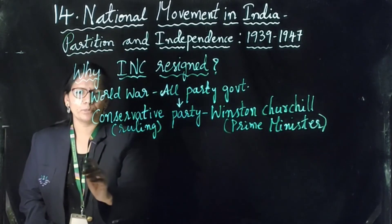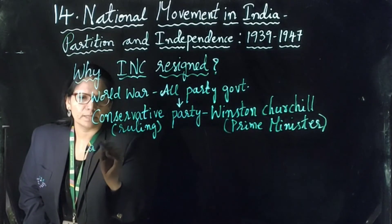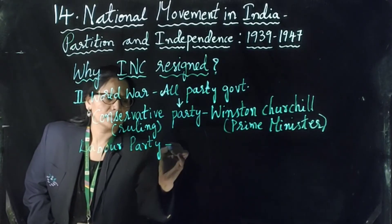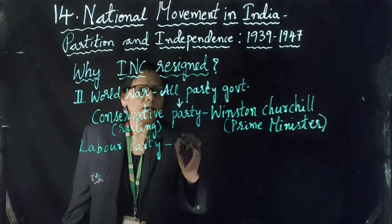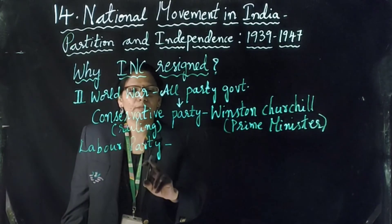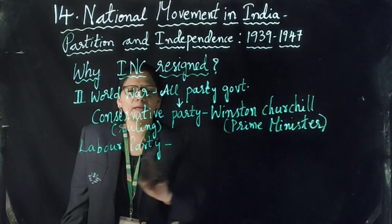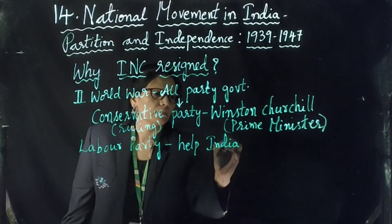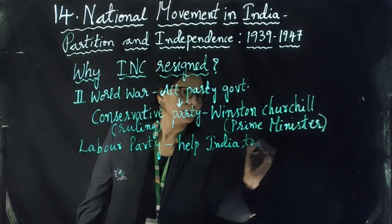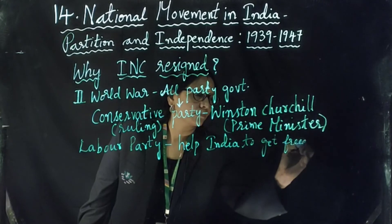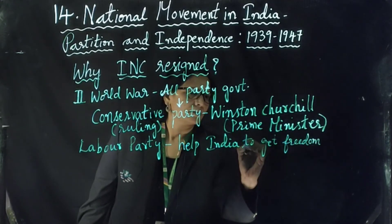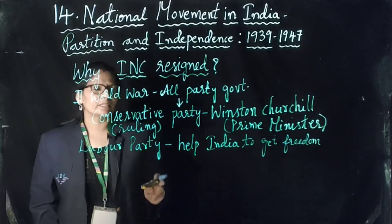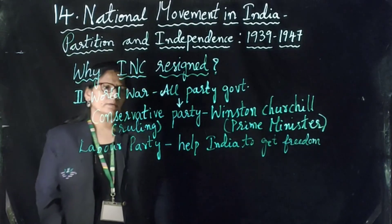In contrast to the Conservative Party, the Opposition party — the Labour Party — was willing to help India. The Labour Party wanted to help India gain complete freedom, unlike the Conservative Party which was not willing to grant India independence.